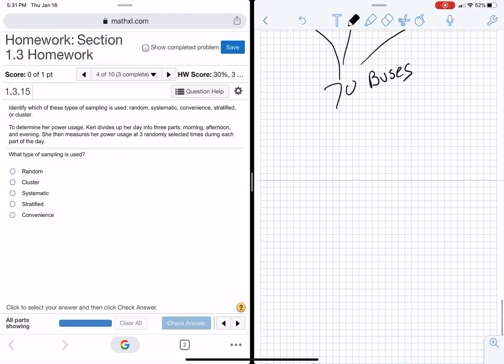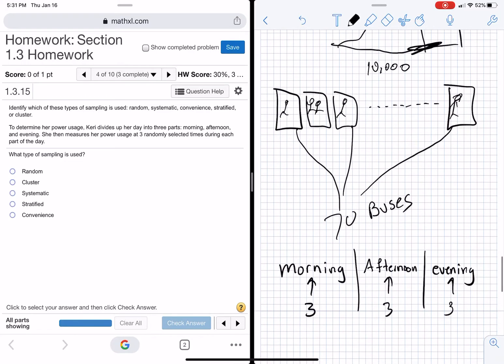Okay, she's going to divide her day into three parts. Morning, afternoon, and evening. Then she measures her power three random days here, three times here, three times here, and three times here. See how that's different than the bus problem?